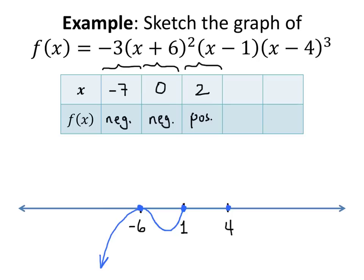And so that means that my function crosses the x-axis here and goes into positive territory. And then it's going to come back down to hit this point at x equals 4.